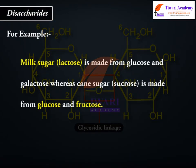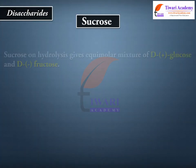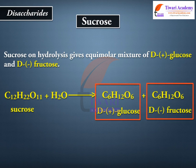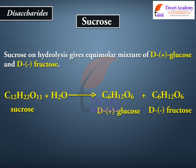For example, milk sugar is made from glucose and galactose, whereas cane sugar (sucrose) is made from glucose and fructose. Sucrose on hydrolysis gives an equimolar mixture of D(+) glucose and D(−) fructose: C₁₂H₂₂O₁₁ (sucrose) + H₂O → C₆H₁₂O₆ D(+) glucose + C₆H₁₂O₆ D(−) fructose.